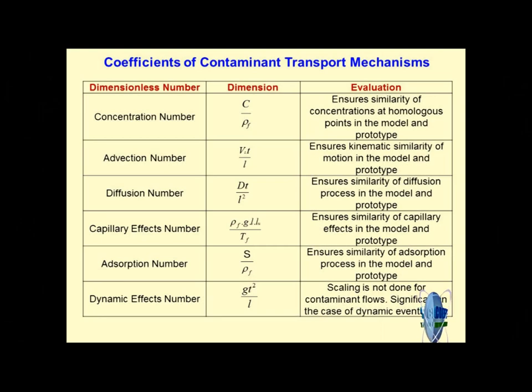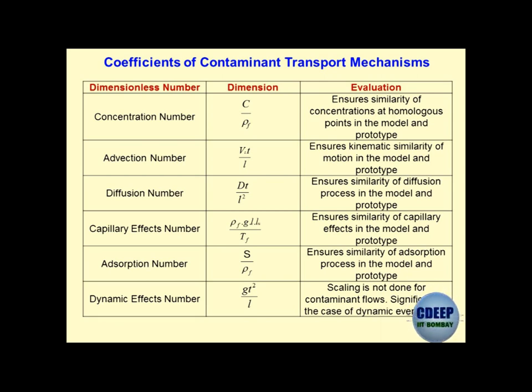This is just a glimpse of what is in the background of the entire thing. In centrifuge modelling, you must have come across all these dimensionless numbers - concentration number, advection number, diffusion number, capillary number, adsorption number, dynamic effect numbers. These are similitudes that have to be equilibrated between your model and prototype. What happens is there could be some numbers which might not get simulated properly - you have to be very careful about this in centrifuge modelling.